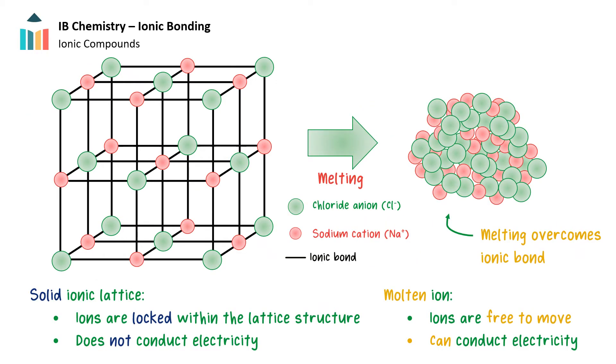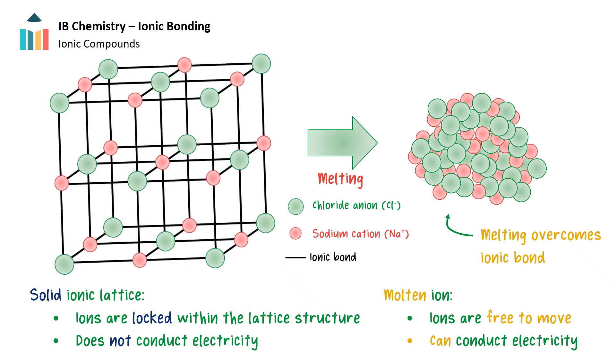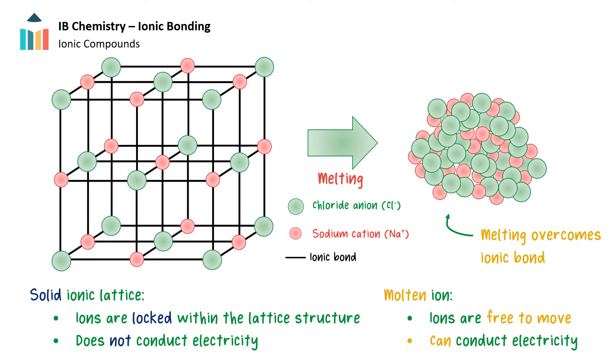As a result, the cations and anions are locked within the lattice structure and are therefore immobile. As a result, ionic solids do not conduct electricity. Once heated past the melting point and in a molten state, the ions are free to move, and the substance does become electrically conductive.